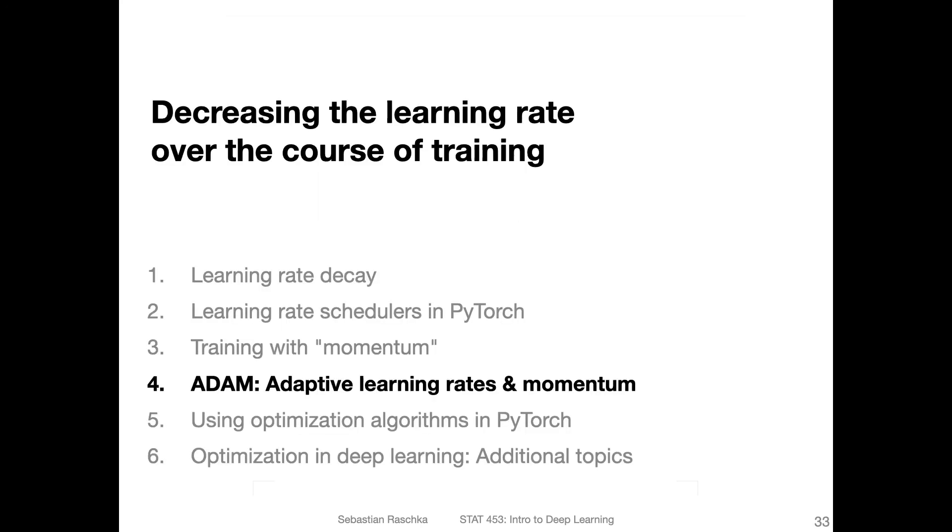In the next video, I will talk about adaptive learning rates. First, there's also an algorithm called RMSprop. And then we will combine these adaptive learning rate concepts with momentum, which will yield Adam, which is probably the most widely used SGD based optimizer in deep learning.